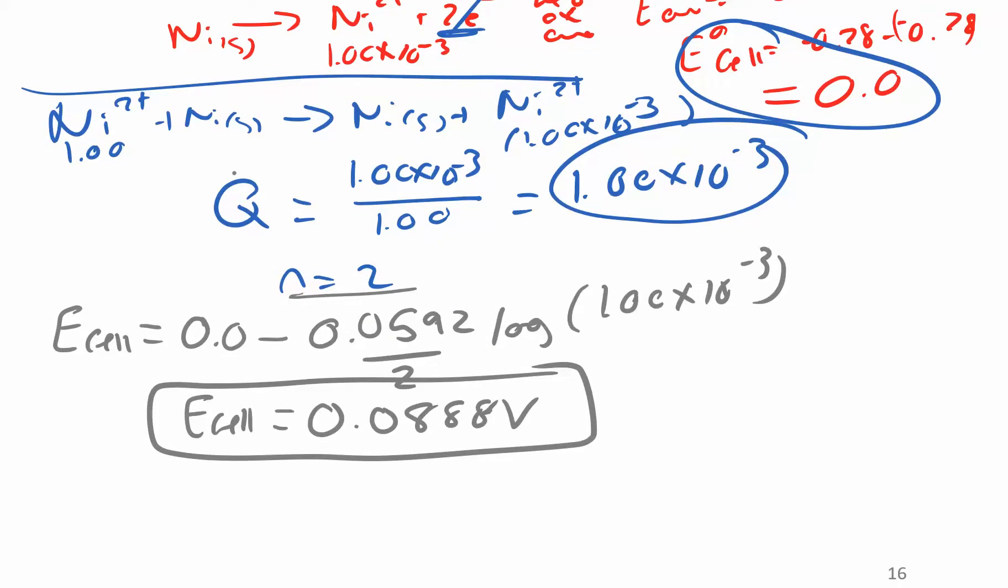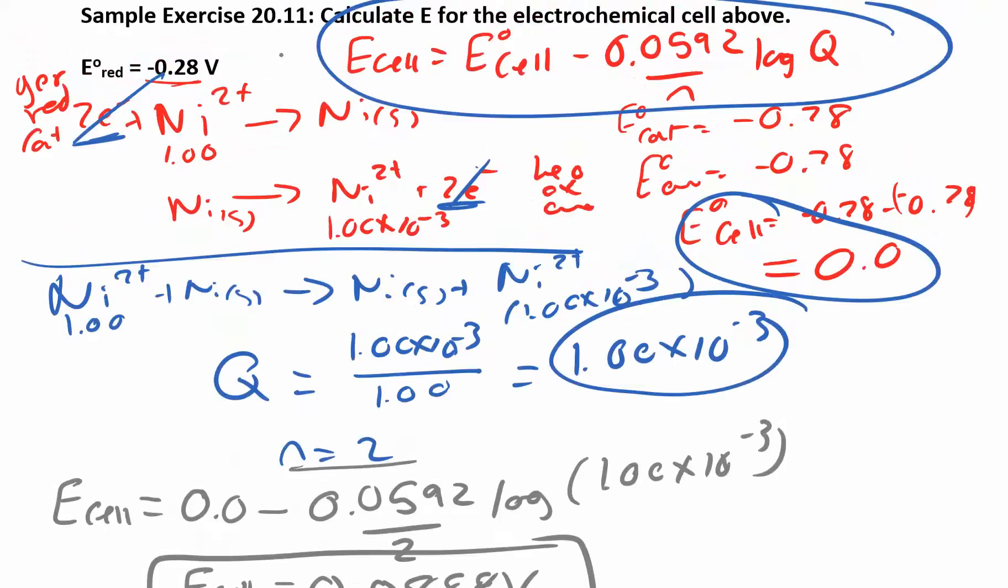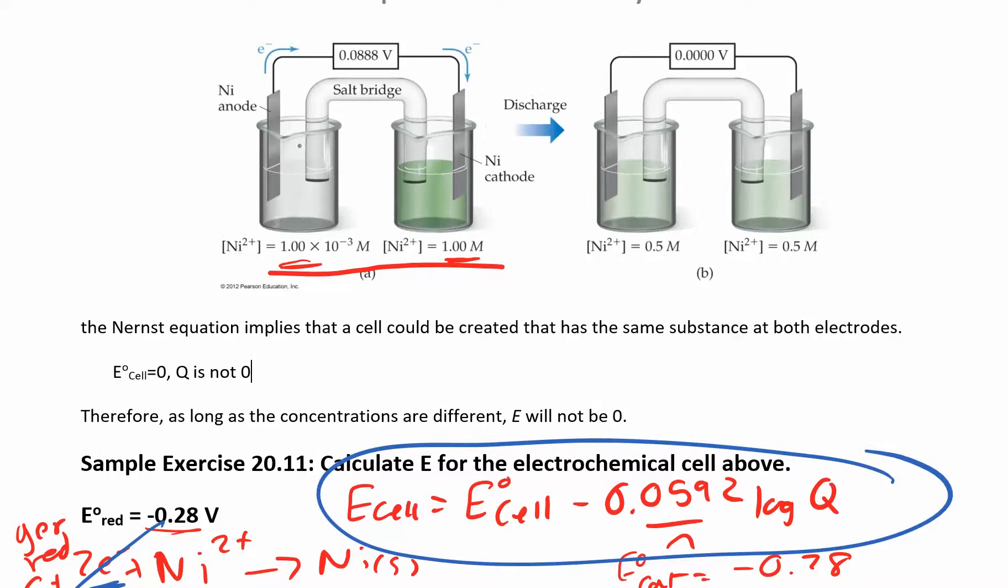So that is your cell potential under non-standard conditions. This is a concentration cell. The only reason why you're getting any difference in cell potential is because these concentrations are different on both sides. This is when the electrodes are exactly the same, right? I have a nickel electrode, nickel electrode. These concentrations are different, and so you need to have the dilute on this side and the concentrated on that side in order for this to...